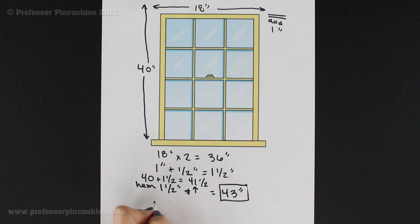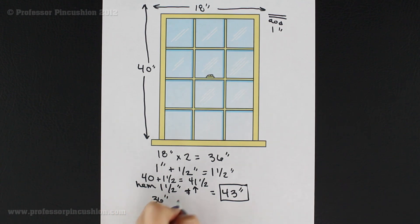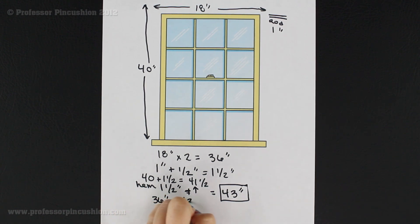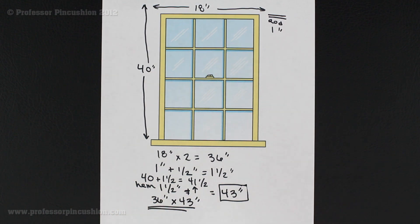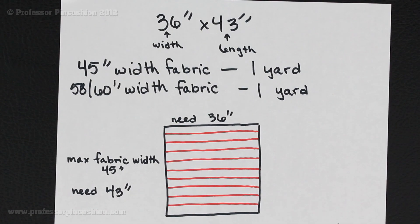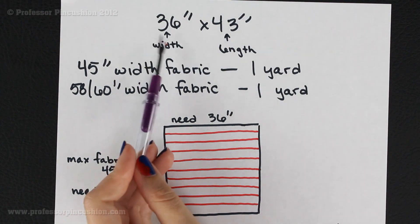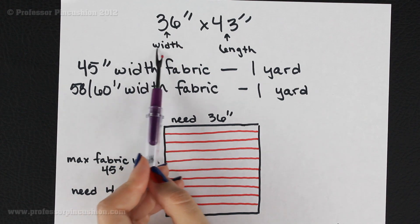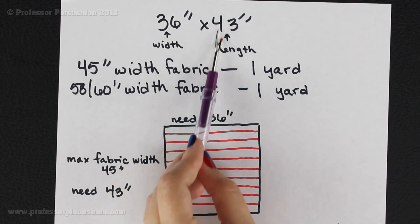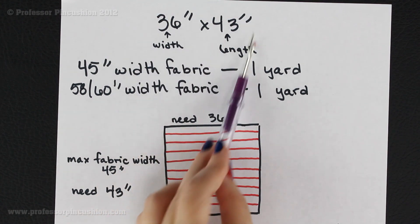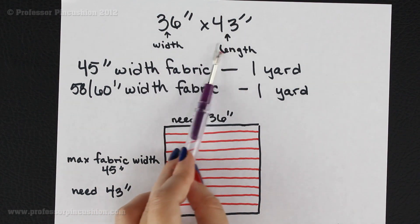So together I'm going to need a piece of fabric that's 36 inches by 43 inches. In my particular case, 36 inches is the width going across the window and I need 43 inches going down the length of the window. So these are my measurements that I'm trying to work with.